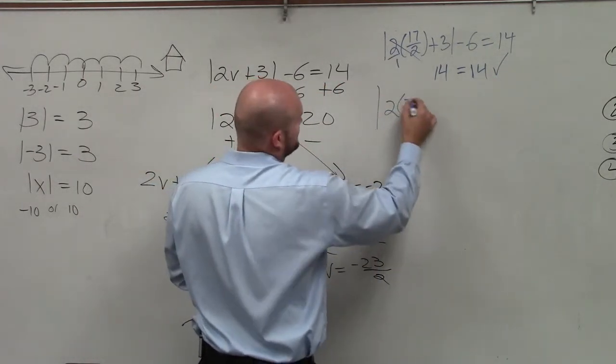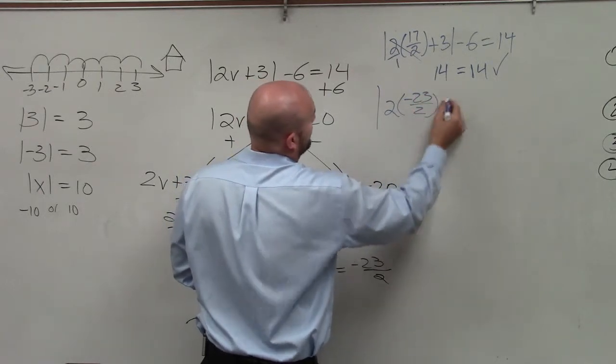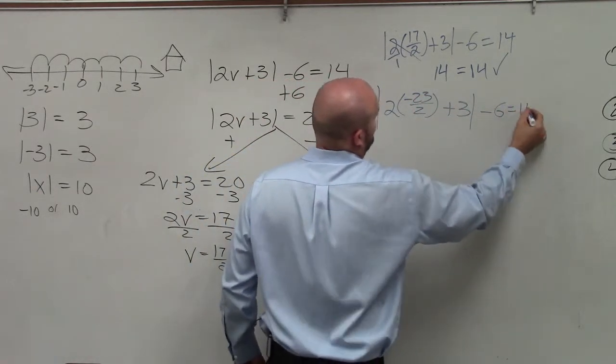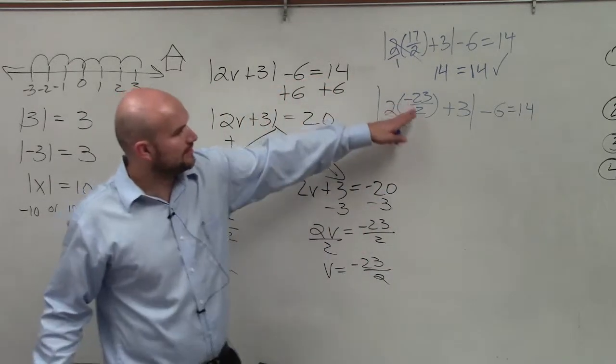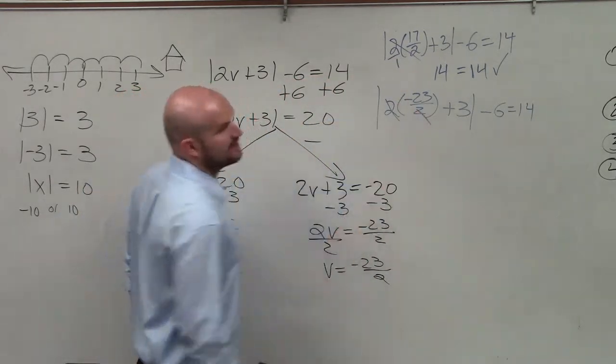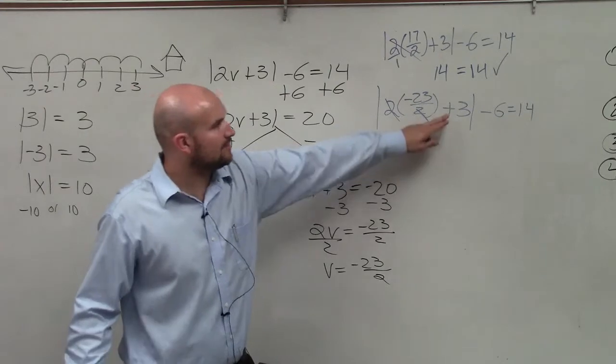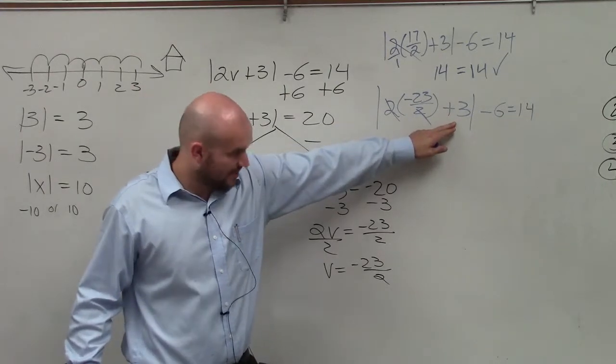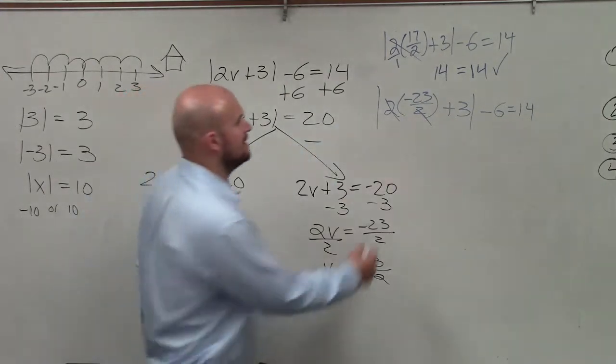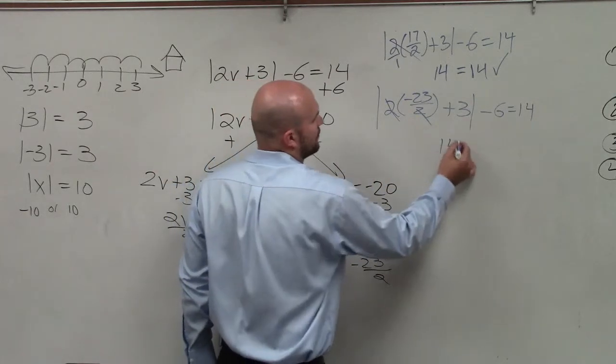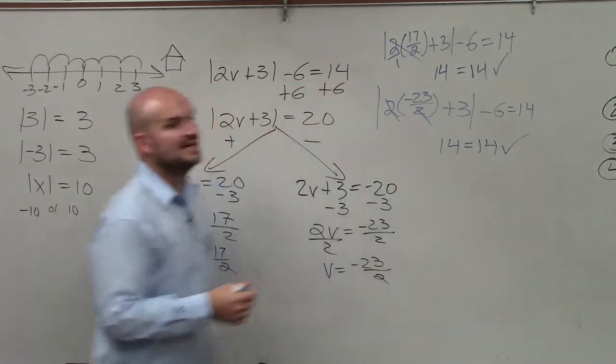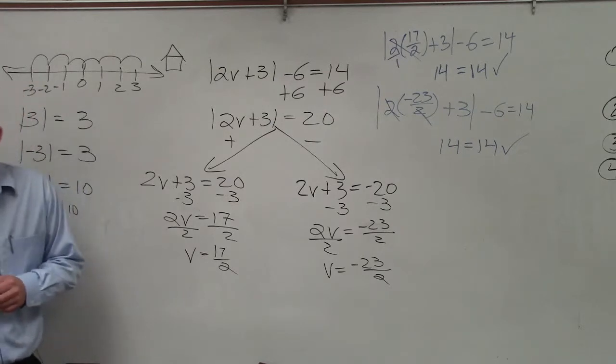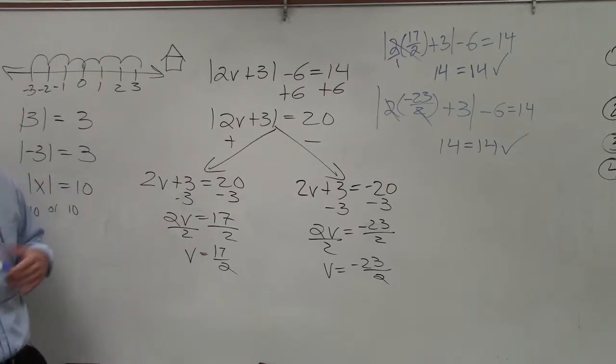2 times negative 23 over 2 plus 3 minus 6 equals 14. So negative 23 over 2, the 2's are going to divide to 1. Negative 23 plus 3 is negative 20. Absolute value of negative 20 is 20. 20 minus 6 is 14 equals 14. So in this case, ladies and gentlemen, you have both of your solutions are true, which is nice.